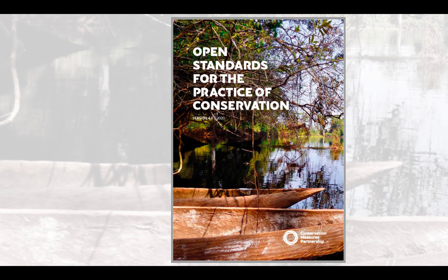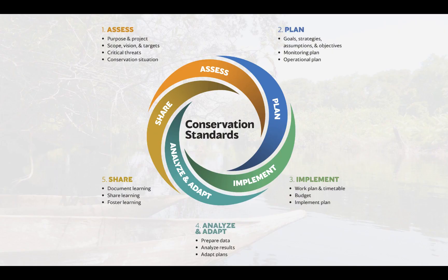You can find and download the Conservation Standards from the readings section for Module 1 on the course website. The Conservation Standards are organized into a five-step project management cycle. Good conservation practice means going through these steps iteratively, designing our initial project with the best available evidence, then monitoring to address areas of uncertainty, and using our findings to adapt and learn, with every step reinforcing the next.